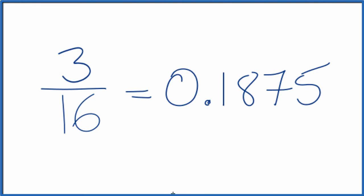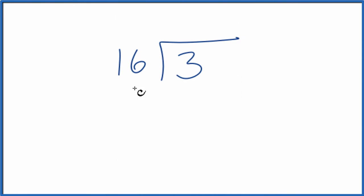We could also do this longhand. We could take 3, and we want to know how many times 16 goes into 3. So we're dividing 3 by 16. 16 doesn't go into 3, so let's put a 0 and a decimal point and call it 30.